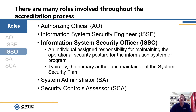Next we have the Information System Security Officer, or ISSO. An ISSO is responsible for documenting and defining the security capabilities within the information system or security program. Typically the ISSO is responsible for the SSP — they'll draft it as the system is being developed, maintain it as the system goes through changes, and help communicate the security expectations and requirements of the system.